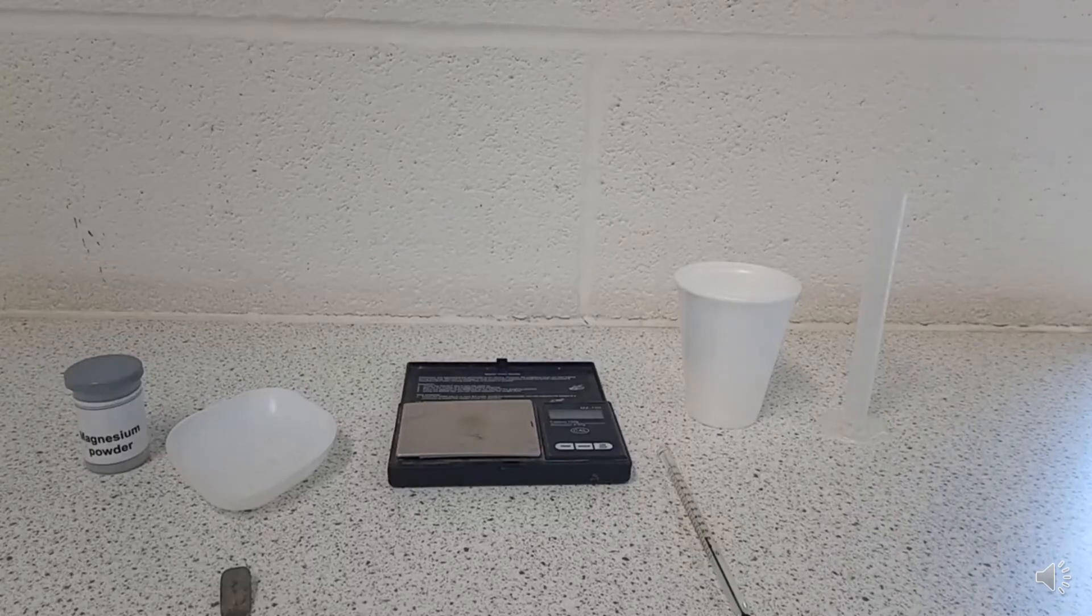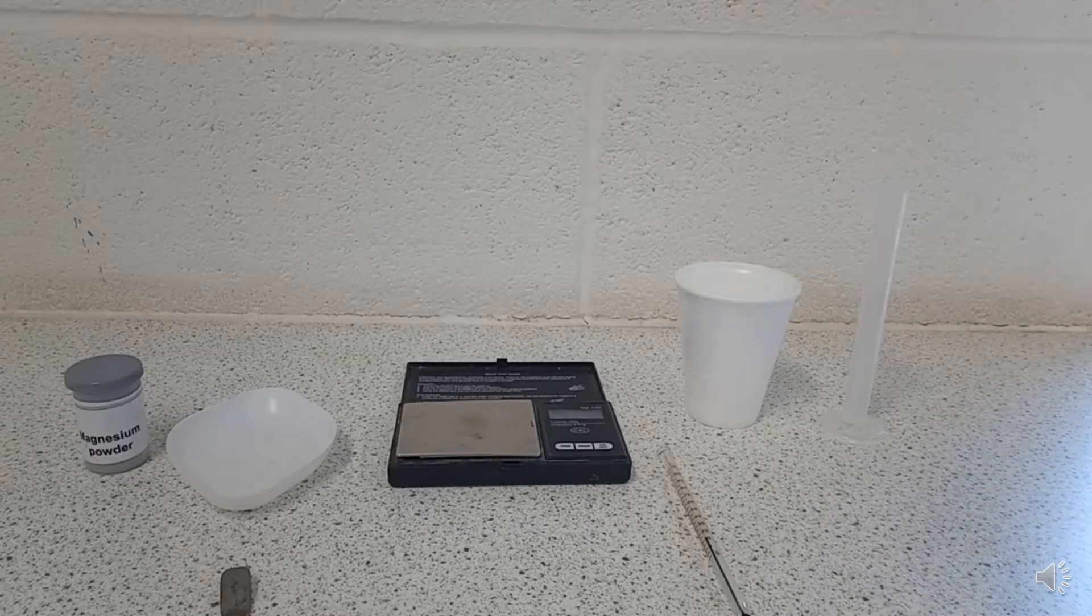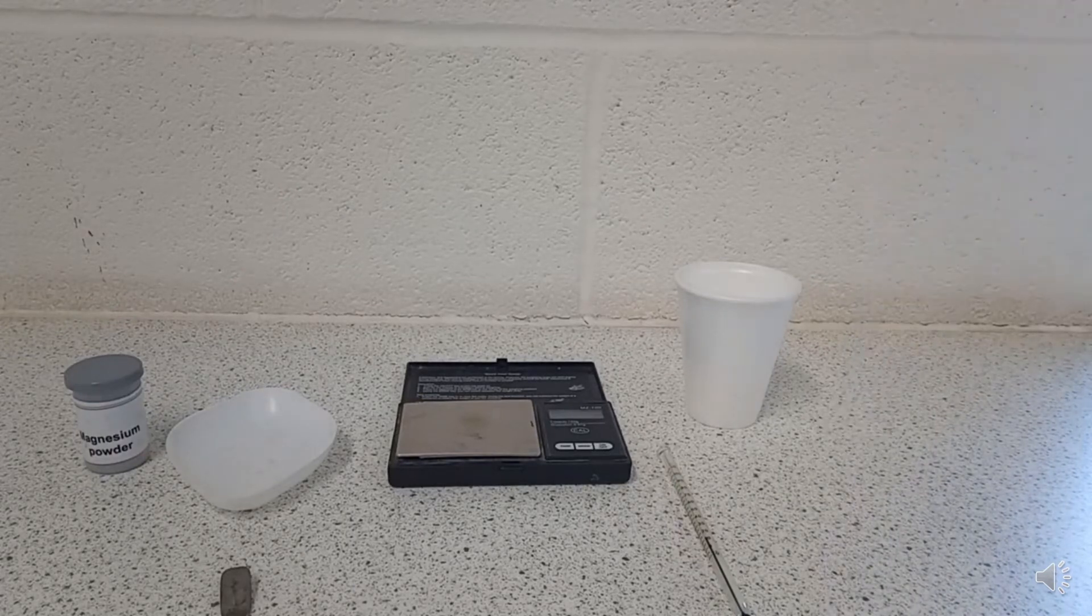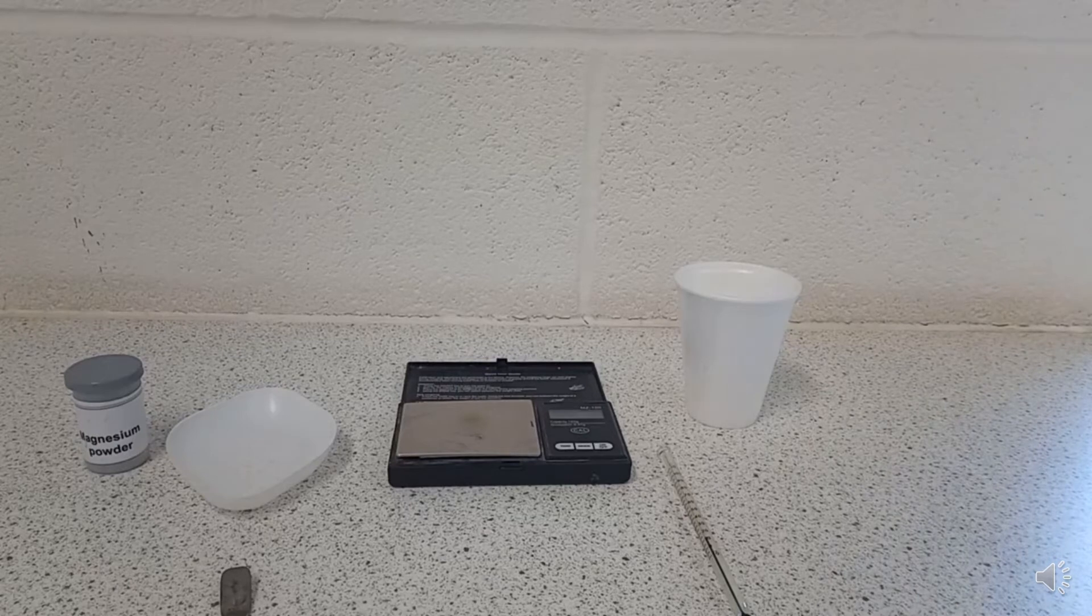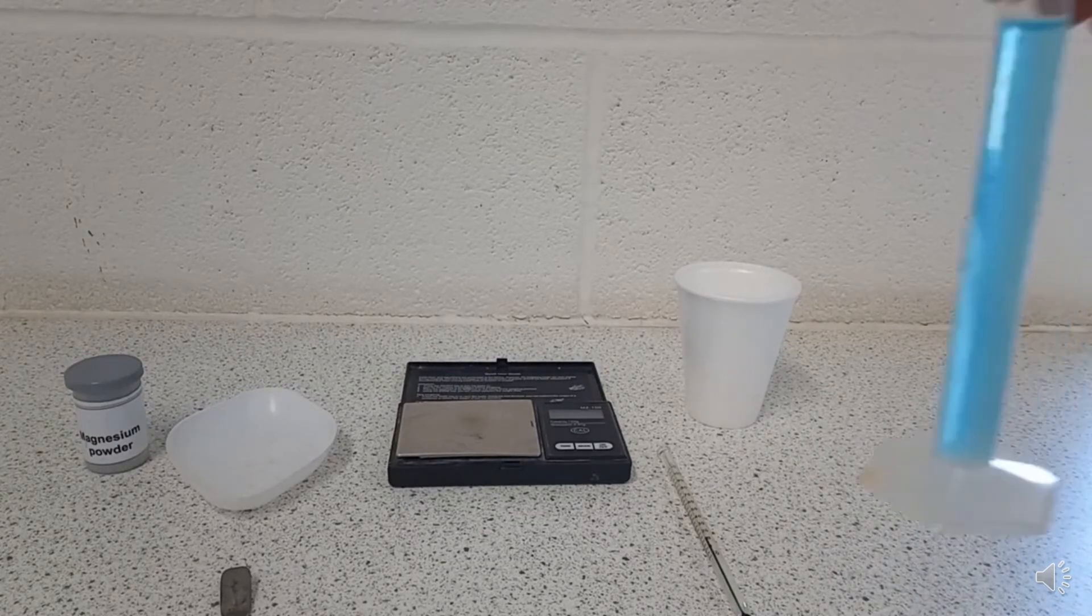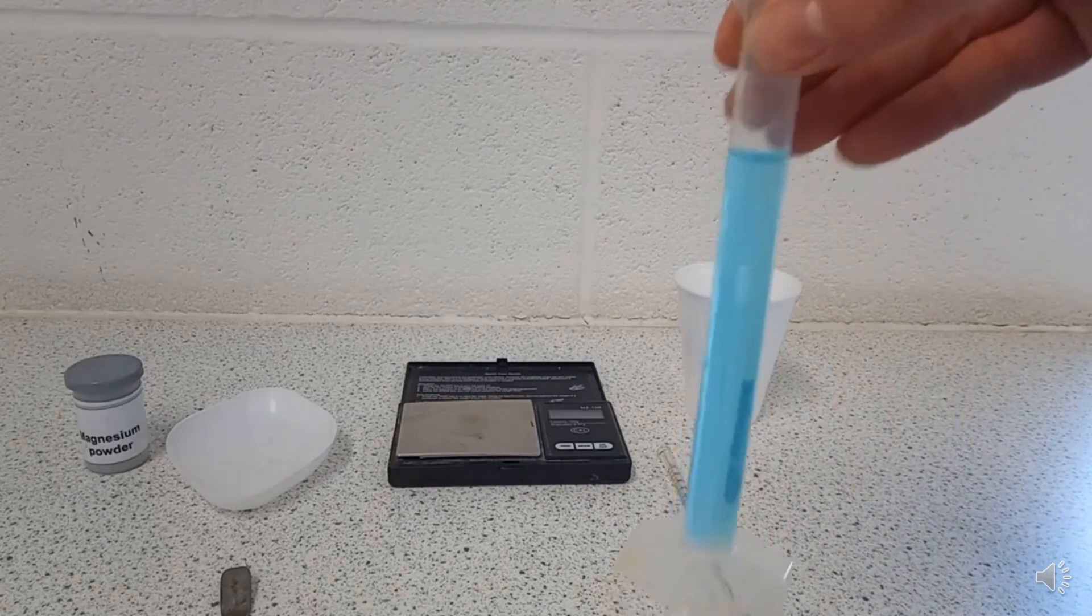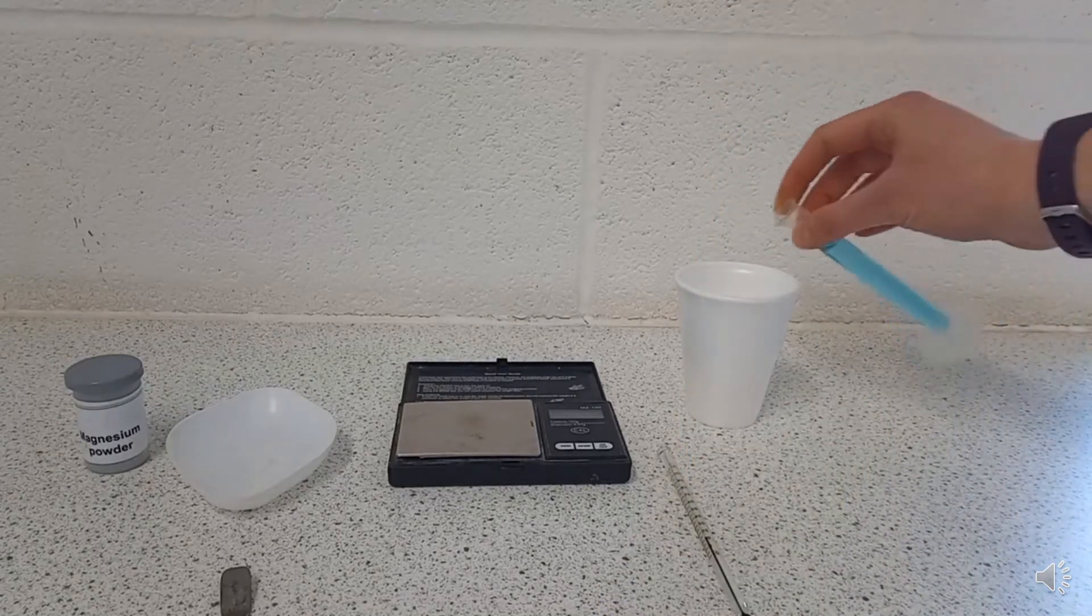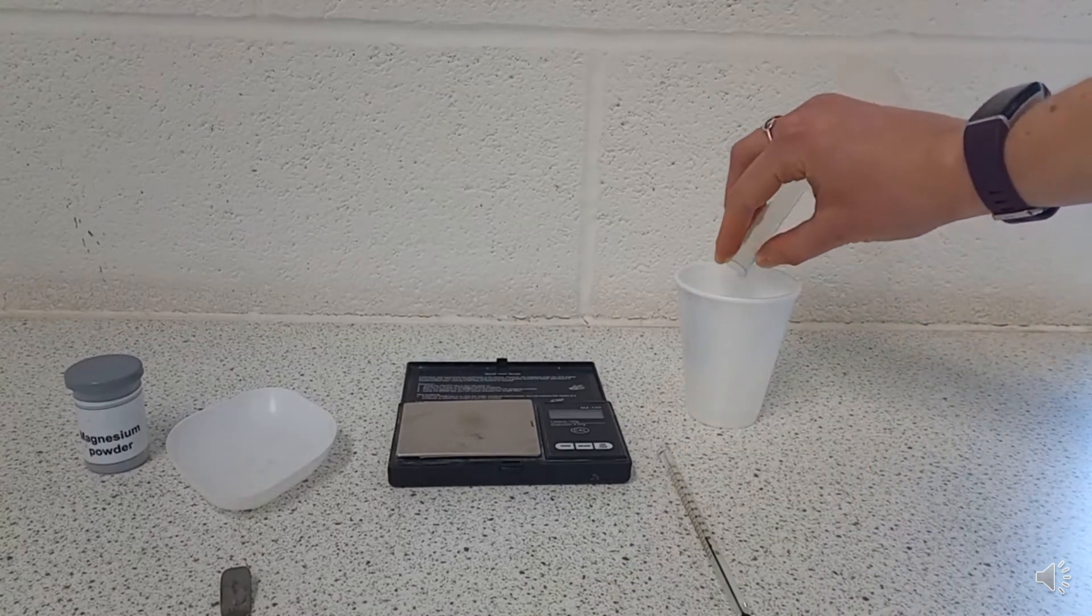I start by measuring a set volume of copper sulfate solution. Here I'm going to use 10 centimeters cubed. If you were writing a method for this, say as an answer to a six mark question, you wouldn't need to name a volume as long as you specified that it was the same for every reaction, but it often takes fewer words to just say measure 10 centimeters cubed.